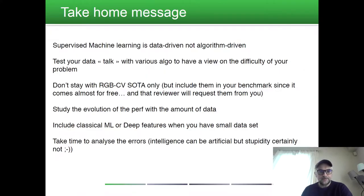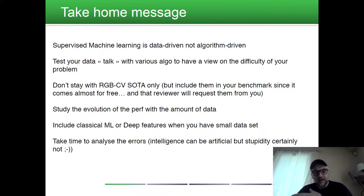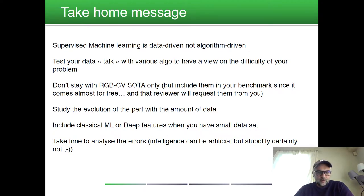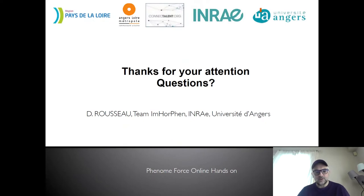The take-home message of this video is that supervised machine learning is data-driven, not algorithm-driven. You have to let your data talk by processing it with various algorithms to understand the difficulty of your problem. Don't rely solely on RGB computer vision state-of-the-art, but do include those models in your benchmark since they come almost for free — they are pre-trained on natural images and reviewers will request them. Study the evolution of performance with the amount of data, and include classical machine learning or deep features when you have a small dataset. Finally, take time to analyze errors — because intelligence can be artificial, but stupidity should stay human and not go artificial. Thank you for your attention.